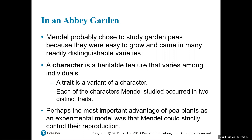It's really important to distinguish between a character and a trait. A character is any feature that varies between individuals — for example, hair color, eye color, or height. A trait is a specific variant or form of that character: for hair color, you can have brown hair, blonde hair, or red hair — those are all traits of the character 'hair color.' Similarly, eye color is the character, and green eyes, brown eyes, hazel eyes, or blue eyes are the specific traits.